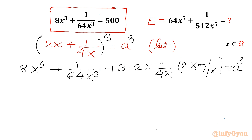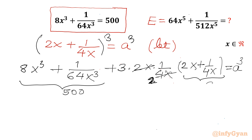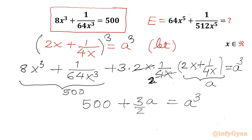We can cancel 2x and 4x, leaving a factor of 1/2. This bracket is a, and this value is 500. So we have 500 + (3a/2) = a³. Multiplying this equation by 2 gives us 1000 + 3a = 2a³.